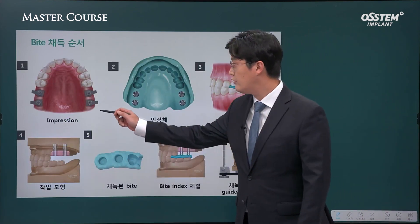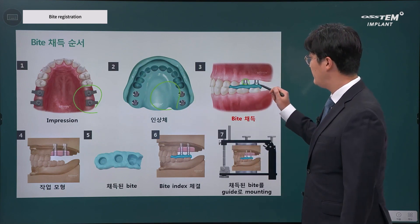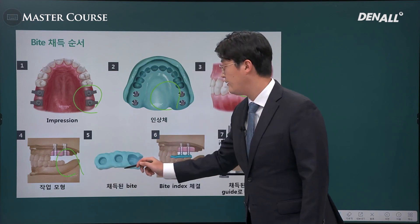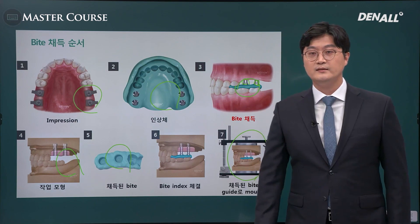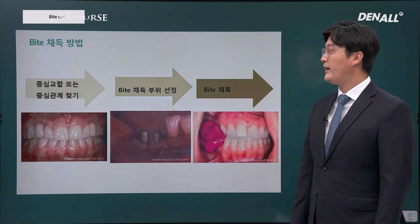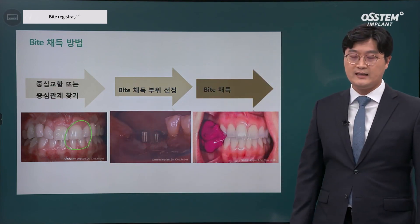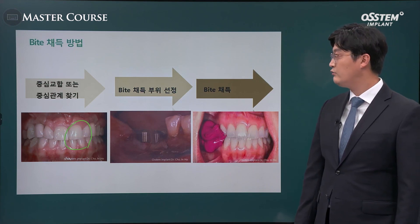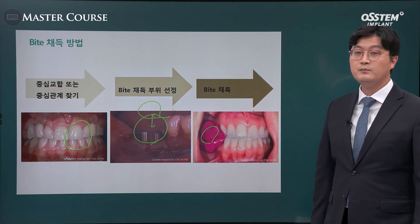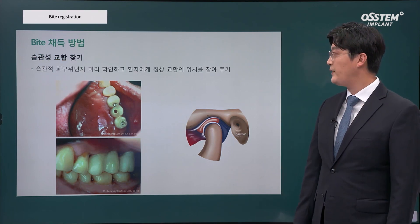These are the steps for bite registration orally: the pickup type or transfer type impression coping is delivered, then taken out of the mouth. OSTEM's bite index is used to register the bite, and you can send it to the lab. A plaster model and bite index are created, and you can mount them to the articulator to create an accurate prosthesis. Always when you register bite, the patient's habitual bite needs to be checked. You have to check the patient's bite many times, look at the area and the space with the opposing teeth, and confirm it. Using polyvinyl siloxane, you take the bite registration.